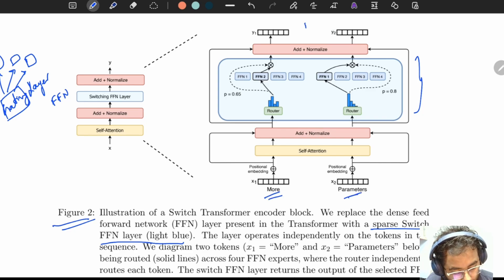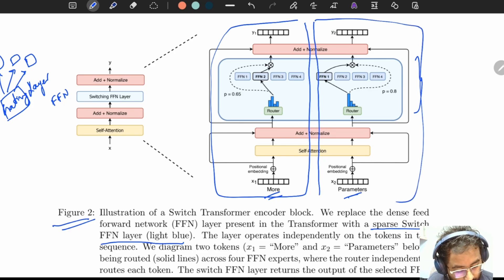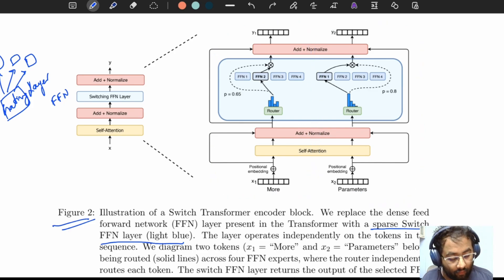Now what is slightly confusing in the paper is that it seems that in the switch FFN layer there are two routers and two sets of experts, but that is not so. What they have demonstrated is the state of the network for two different inputs. It's like this is the state of the block for one input and this is the state of the block for another input. The authors want to demonstrate that for different inputs the router selects different experts for the tensor to pass through. For example, if the input is the string 'more' the router selects the second expert, while if the input is the string 'parameters' the router is selecting the first expert.